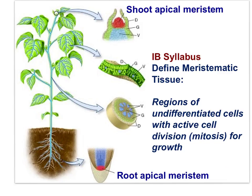Here is an IB syllabus statement: Define meristematic tissue. Meristematic tissue would be regions of undifferentiated cells with active cell division — mitosis — for growth. This is the apical shoot meristem, and these are the apical root meristems.